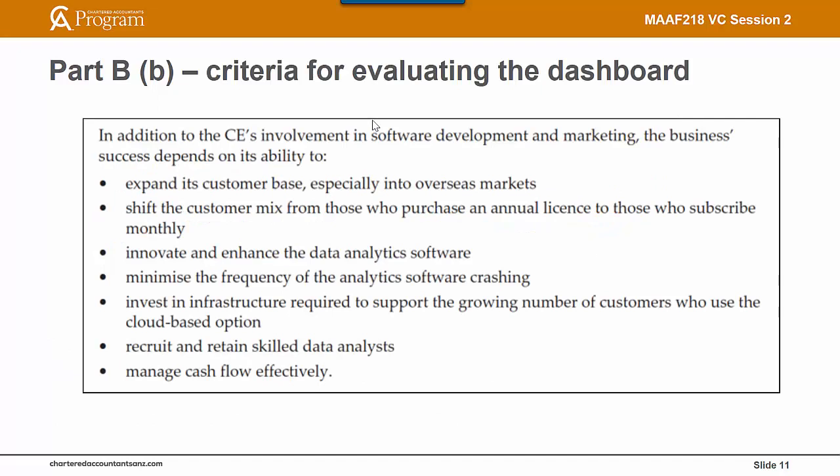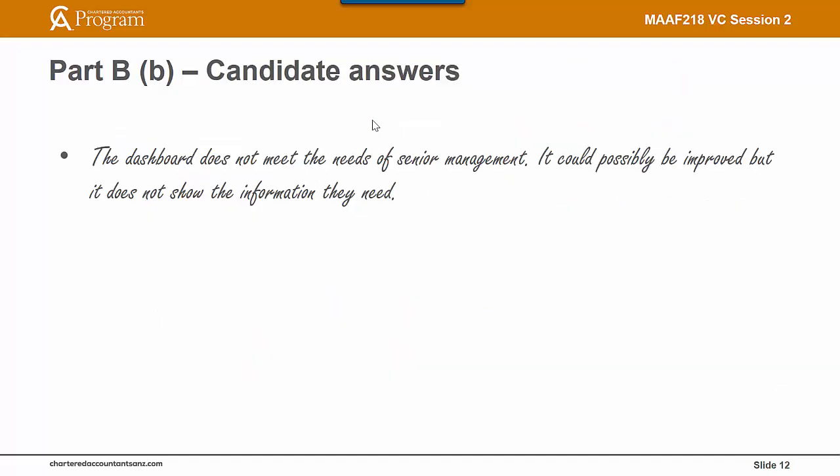Here is an extract from the question itself listing the business success factors. For example, the first one is to expand its customer base, especially into overseas markets — so the scorecard really needs to reflect revenue from local markets and overseas markets separately. It also needs to show the breakdown in revenue between sales to annual license holders and those who subscribe for the monthly cloud software. And importantly, DATO needs to manage its cash flow effectively, so we would expect to see cash flow information in that dashboard.